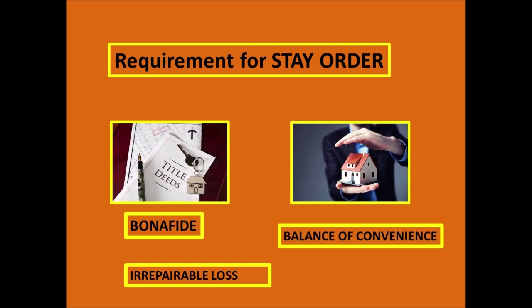The second point is balance of convenience. This means: if your property is being sold, or there is a house involved, what is the stake for each party? You need to show who the other party is and demonstrate where the balance of convenience lies.